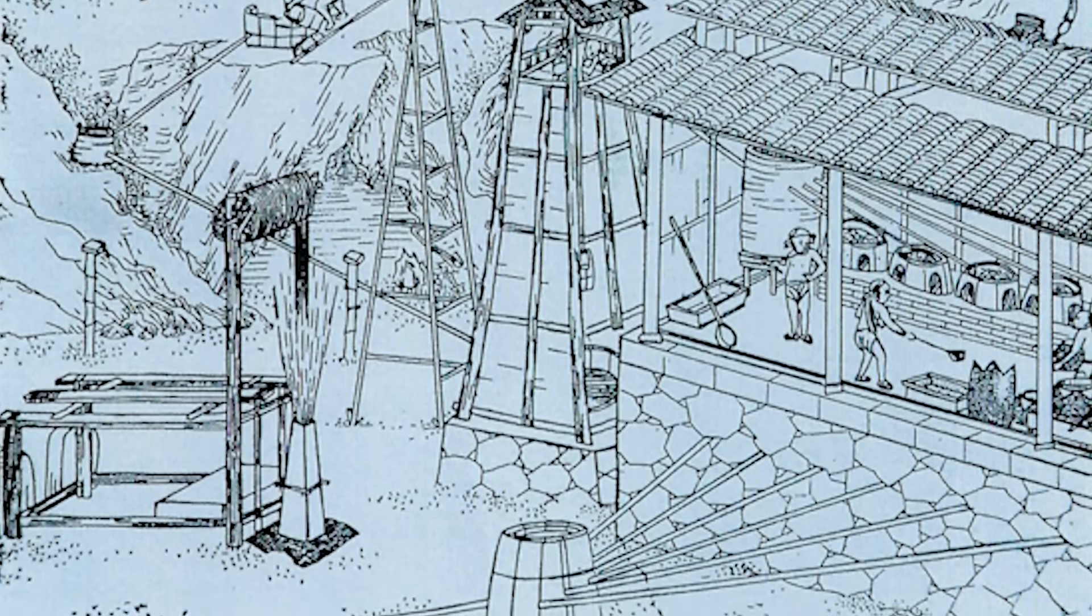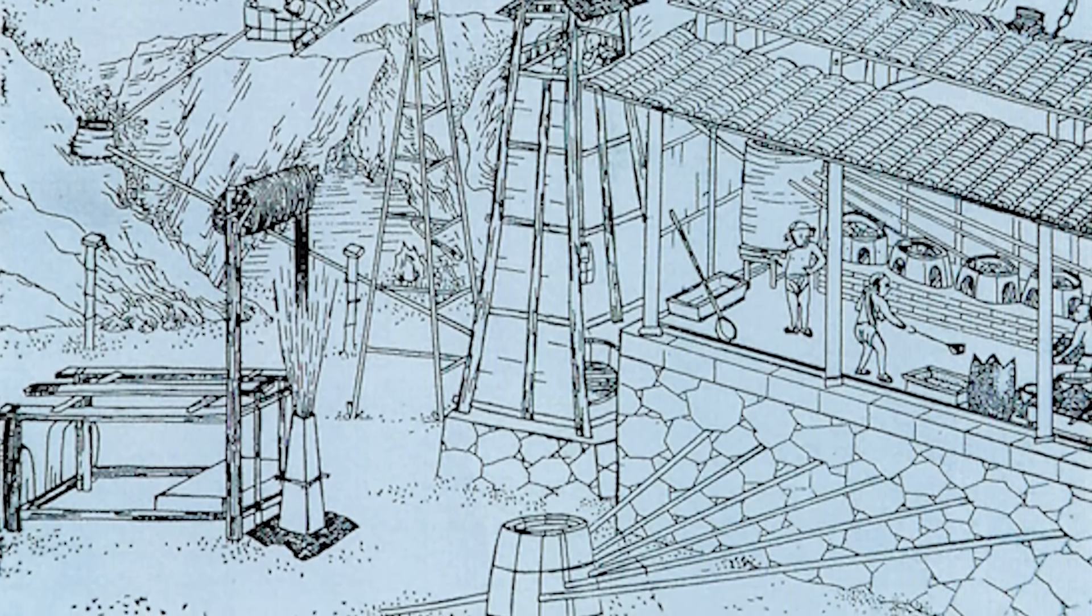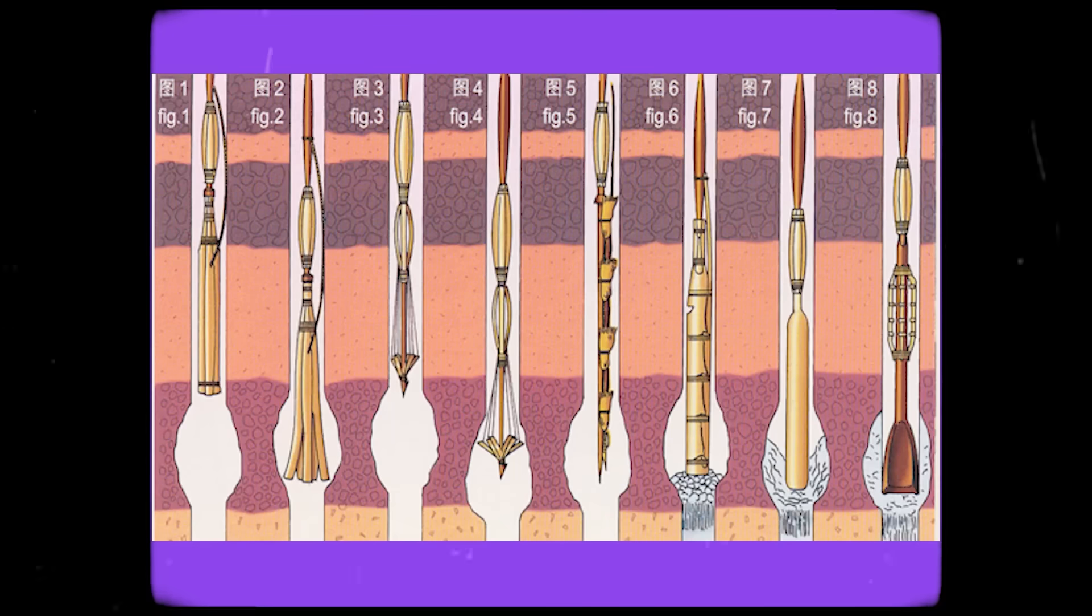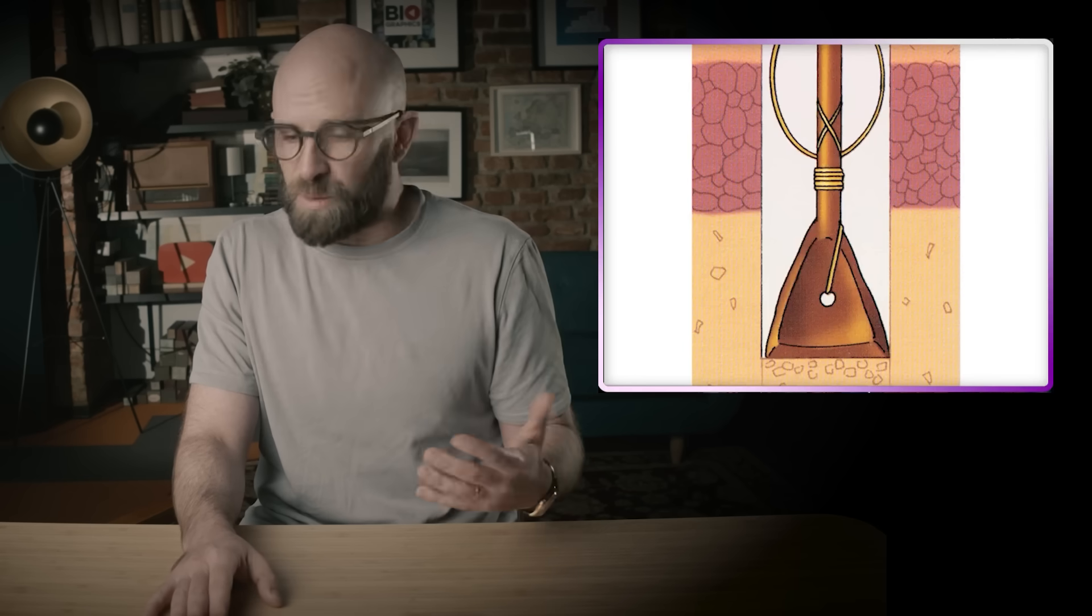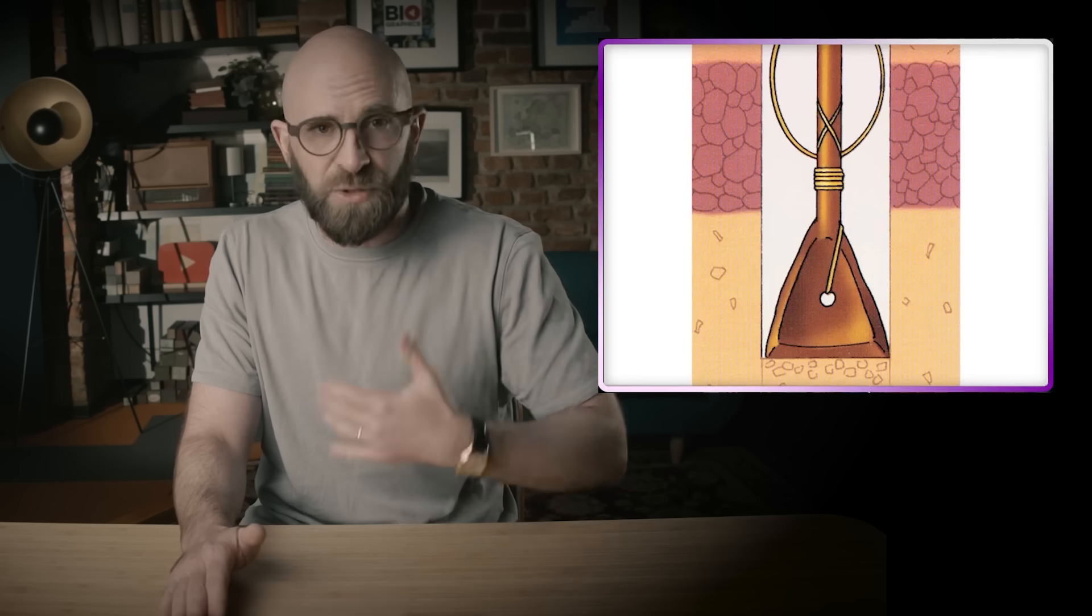The drill bit consisted of a long vertical bamboo pole tipped with a cast iron chisel head, which in turn was connected to a pivoting seesaw-like platform. A worker would repeatedly jump on and off the platform, raising and dropping the drilling bit onto the bedrock below. Unsurprisingly, this was a slow, tedious process: the drilling speed topped out at less than a meter per day, and it often took months to strike a brine deposit.